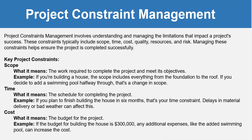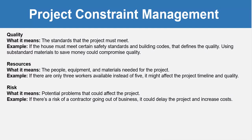Time refers to the schedule for completing the project. For example, if you plan to finish building the house in six months, that is your time constraint — delays in material delivery or bad weather can affect this. Cost is the budget for the project; for example, if the budget for building the house is $300,000, any additional expenses like the added swimming pool can increase the cost.